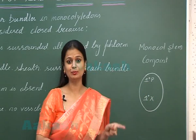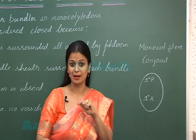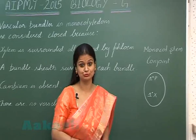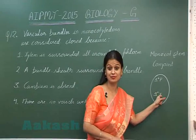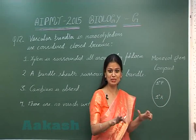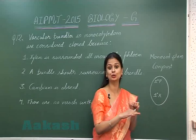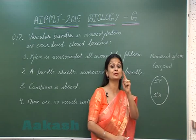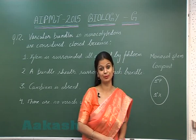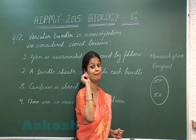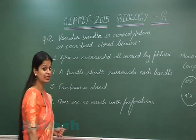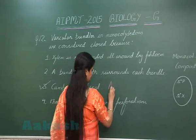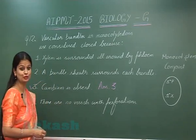Between the phloem and xylem in the monocot stem, the cambium is absent — that meristematic tissue is absent. Due to the absence of this meristematic tissue, the formation of secondary phloem and secondary xylem is absent. This means the vascular bundles will not grow; the growth is closed. That's why they are called closed vascular bundles. The growth is closed due to the absence of meristem, which is called cambium. So the right option is option number three.